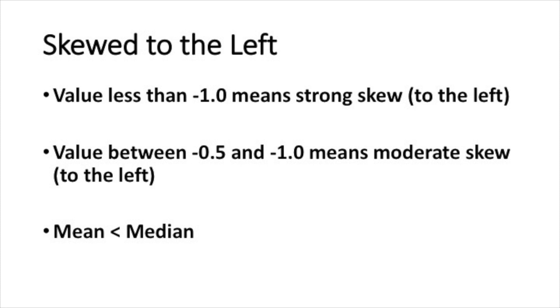If the skewness statistic is negative, it tells you the distribution is skewed to the left. A value less than negative 1 — such as minus 2 or minus 1.5 — means strong skew to the left. A value between minus 0.5 and minus 1 means moderate skew to the left. Also, if a distribution is skewed to the left, the mean is less than the median.